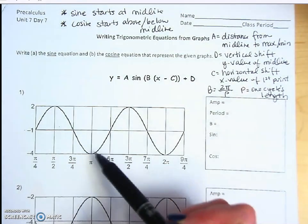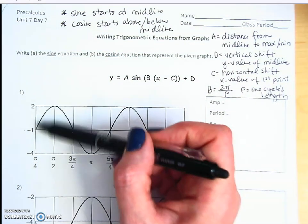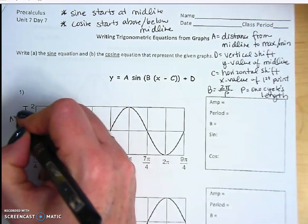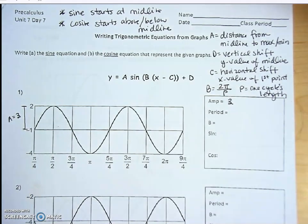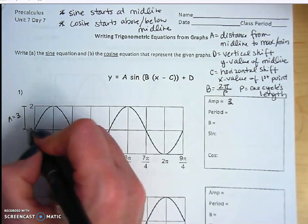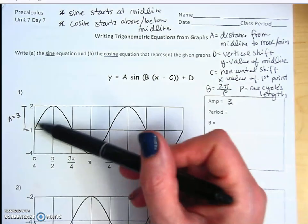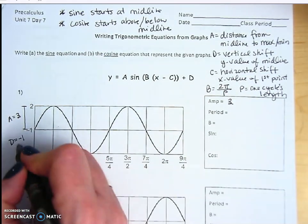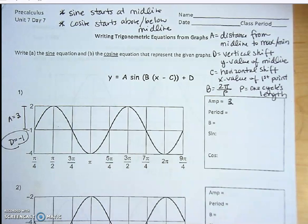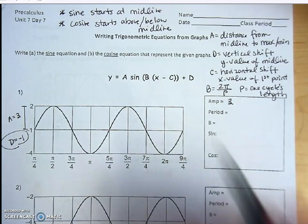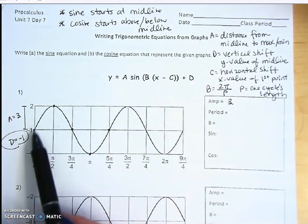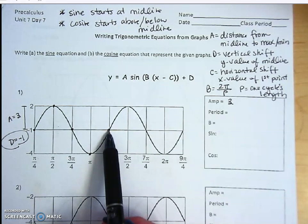Let's put all that together for the first graph. Starting with our a value — the amplitude is the distance from the midline to a max or a min. Going from 2 to negative 1, that distance is 3, so a equals 3. This midline at negative 1 means the graph has shifted down, so D is negative 1. For the period, I identify five points for one cycle: mid, max, mid, min, mid.